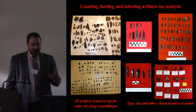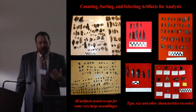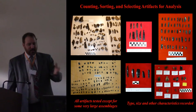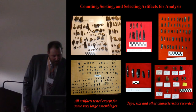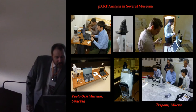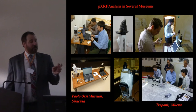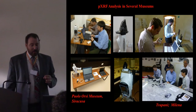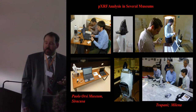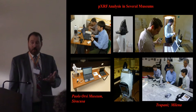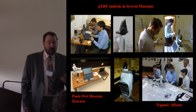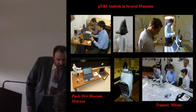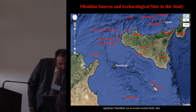It's also important to do basic characterization of these objects — are we talking about cores, blades, flakes, debitage, etc. — because there can be distinctions in terms of the selection of obsidian from different sources, but also in terms of the actual technology, which in fact also changed over the course of the Neolithic and Bronze Age time periods.